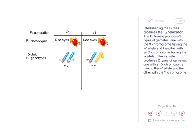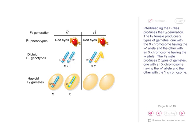Interbreeding the F1 flies produces the F2 generation. The F1 female produces two types of gametes: one with the X chromosome having the W+ allele, and the other with an X chromosome having the W allele. The F1 male produces two types of gametes: one with an X chromosome having the W+ allele, and the other with the Y chromosome.